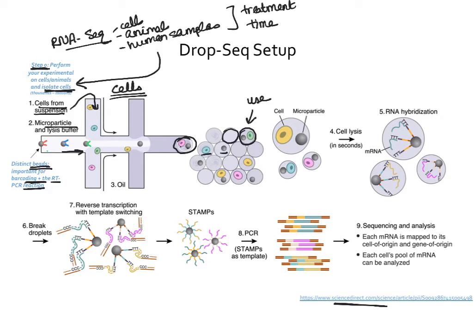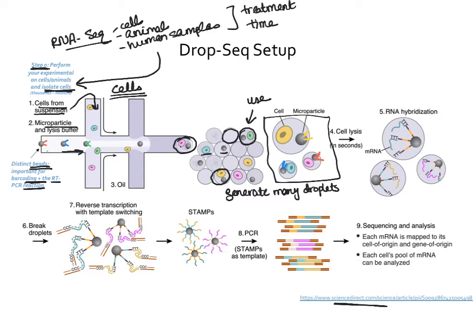The droplets that have both a cell and a bead together are the ones you actually use. You have to generate a lot of droplets to get a good number of useful droplets with both cell and bead. Remember the bead is what gives us our barcode, and the cell is the one cell we want to analyze and get sequencing information from. We have to have both of them together in one droplet because the droplet holds them in place to provide the cell with the barcode and with the necessary reagents to perform the PCR reaction.